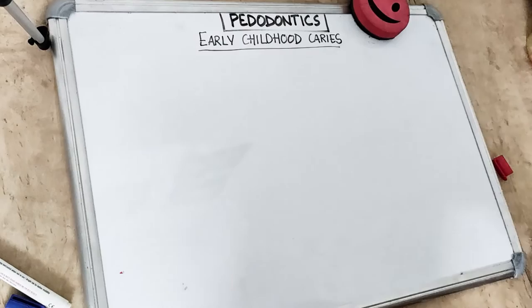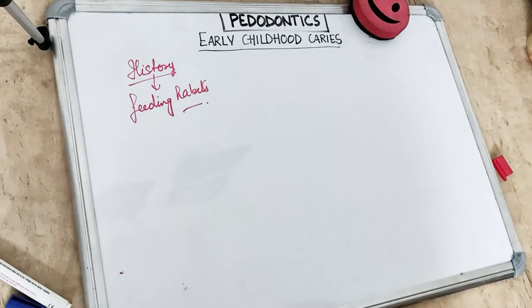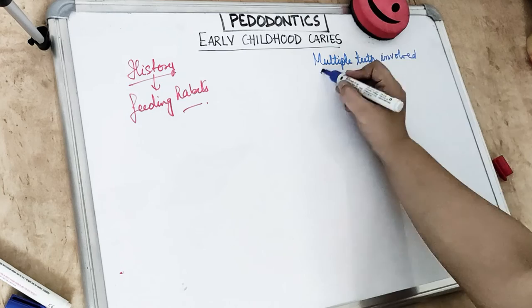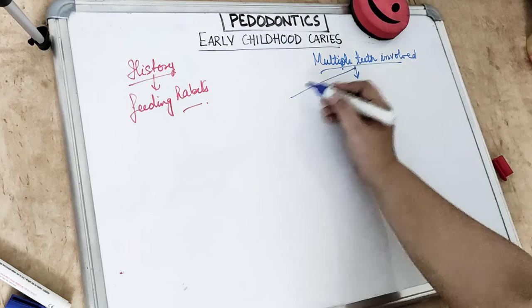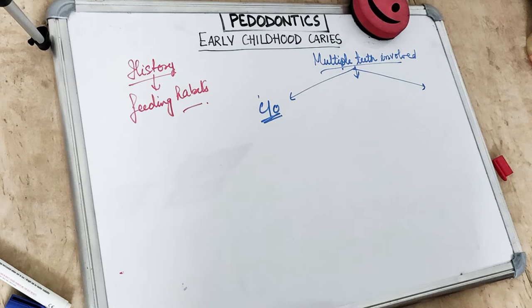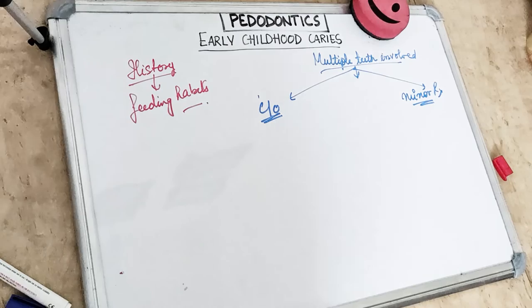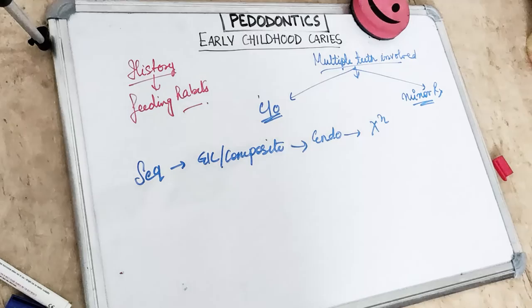We should take maternal and feeding history to diagnose and treat ECC. Coming to treatment: when multiple teeth are involved, quadrant-wise treatment is done. The first option is to deal with the chief complaint first — in severe debilitating cases with pain, the chief complaint is treated first. Minor treatment is started afterwards. The sequence should be GIC or composite filling, followed by endodontic management, and finally extraction or exodontia.